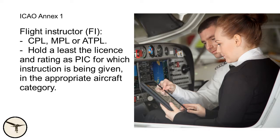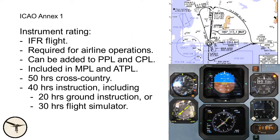As an instructor, you must hold at least the license and rating as pilot in command for which you will give instruction. You can also add an instrument rating to your license, which means you can fly instrument flight rules — and this is required to get an airline job. An instrument rating can be added to a PPL and a CPL; it's included in an MPL and ATPL. To qualify for an instrument rating, you need 50 hours cross-country flight, and the training consists of ground school and 40 hours of instruction. If you combine an instrument rating with your CPL, you can save 10 hours of flight training.